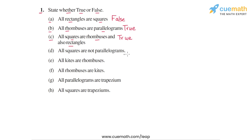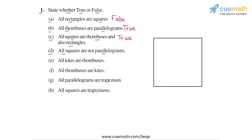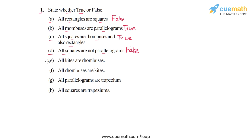Statement D says: all squares are not parallelograms. By definition, a square is a parallelogram in which all sides are equal and all angles are 90 degrees. So statement D is clearly false, because any square must also be a parallelogram.